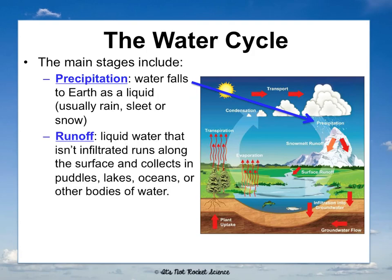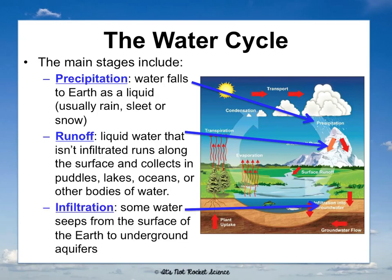Runoff is when liquid water isn't absorbed into the ground, so it runs along or runs off the surface — it could run down a mountain or along grass into a river. We see runoff on pavement on the side of roads when it rains. Infiltration is the opposite: that's when water actually goes underground and can build up in aquifers. It's either going to runoff or it's going to infiltrate.